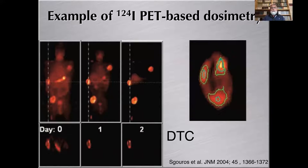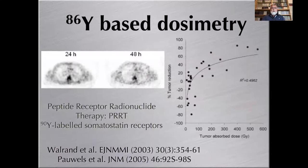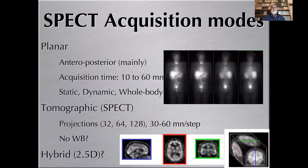Yet it has been proposed, and this is one of the first examples proposed by Sguros to follow in time — day 0, 1, and 2 — differentiated thyroid cancer metastasis with iodine-124. Another example, to be discussed in the next lecture, is that of yttrium-86-based dosimetry, which allowed some colleagues to establish the absorbed dose-effect relationship for tumors.